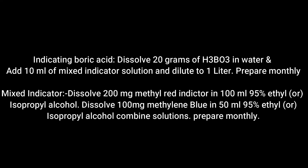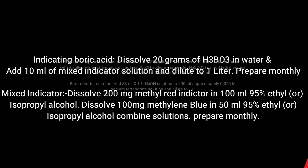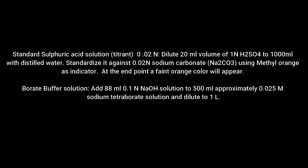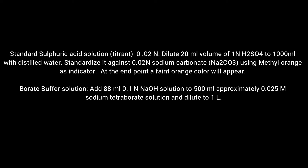Combine the solutions. This solution should also be prepared monthly. For standard sulfuric acid solution 0.02 normality preparation, dilute 20 ml of 1 normal H₂SO₄ to 1000 ml with distilled water. Standardize it against 0.02 normality sodium carbonate using methyl orange as indicator. At the endpoint, a pale orange color will appear.